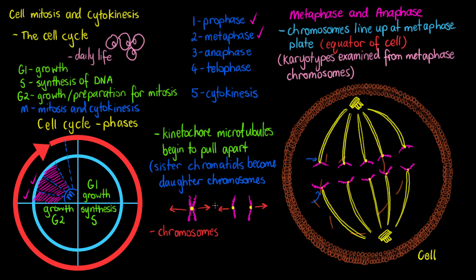We are moving our chromosomes toward opposite poles of the cell, with movement generated by the motor proteins within our kinetochores. Our centrosomes — the structures at either end of our cell — are playing an ongoing massive role in mitosis. Because we have one centrosome at each pole of this cell, we are going to end up with one copy per new cell, exactly like with our chromosomes and DNA content.